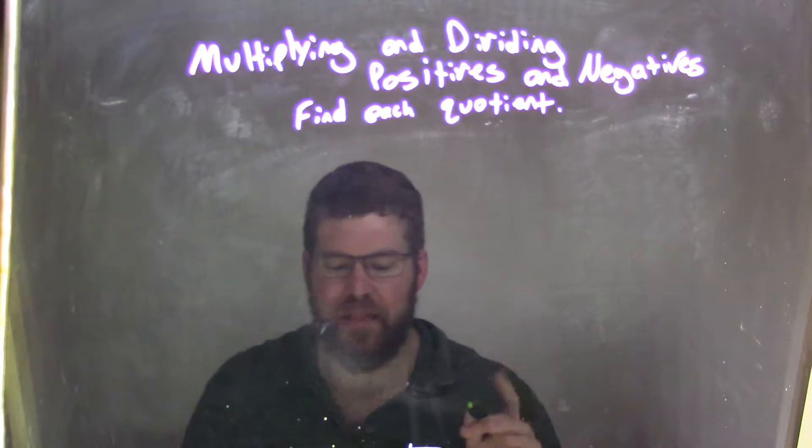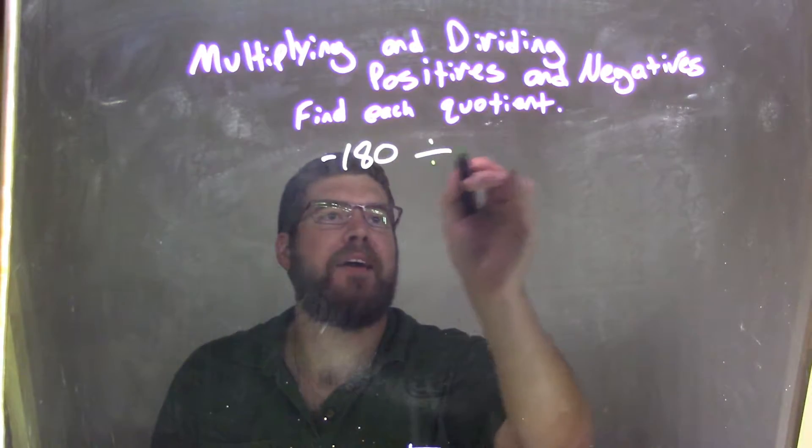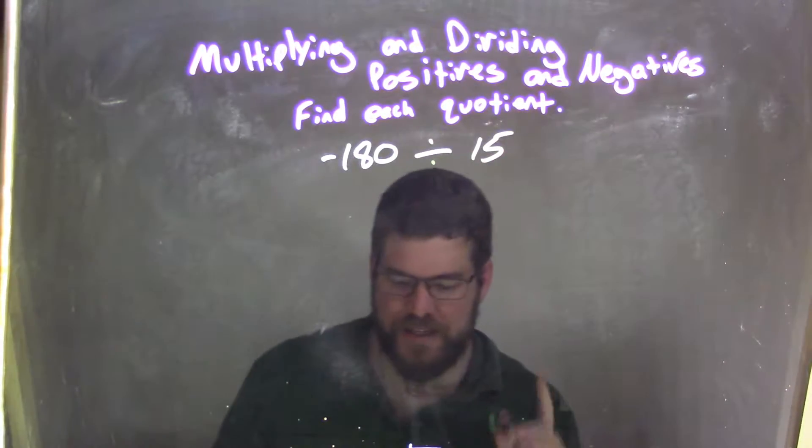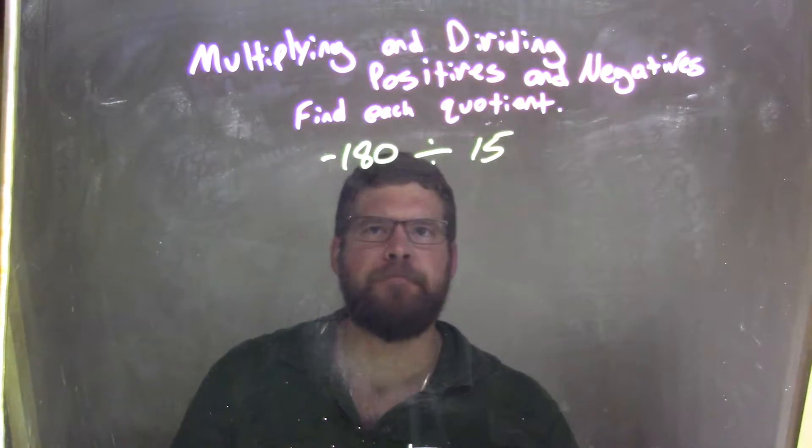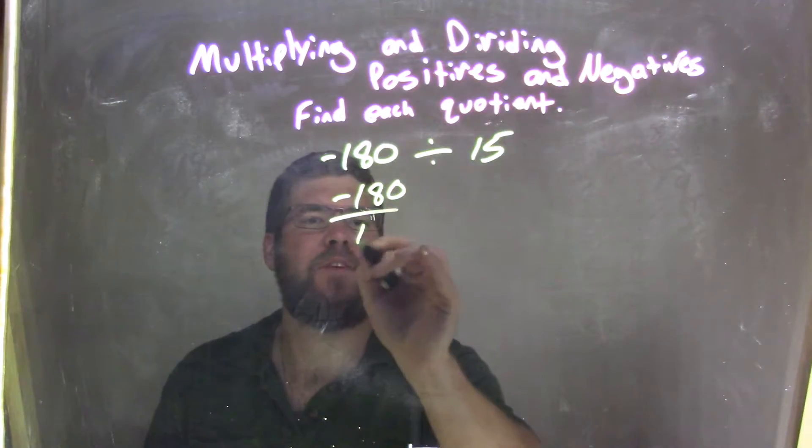So if I was given this quotient, negative 180 divided by 15. Negative 180 divided by 15. I like to break these as fractions. Negative 180 over 15.